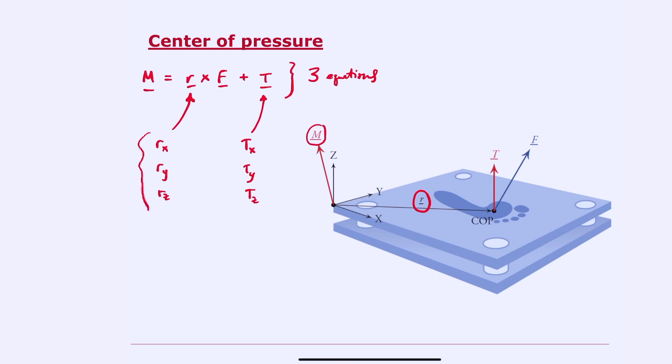Well, as far as r goes, we definitely know that r lives in the xy plane. Right? This vector is going to live on the surface of the force plate. Therefore, rz equals zero. And we have two pieces of information about moment t.